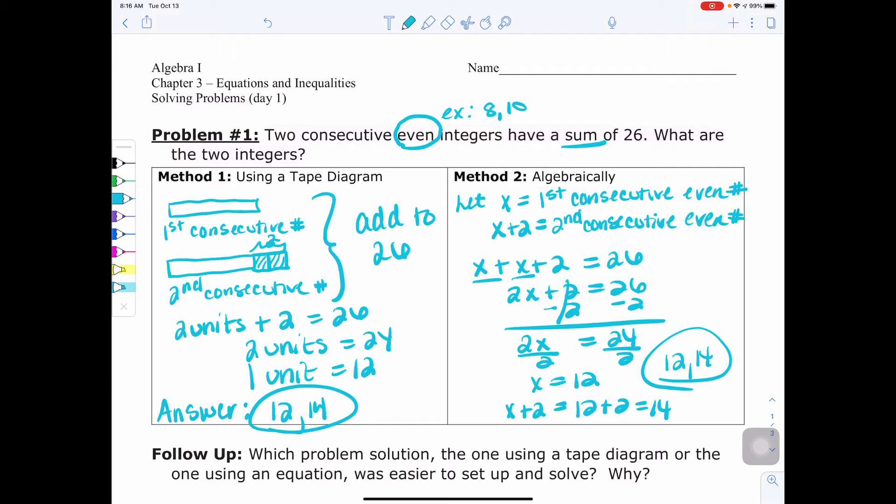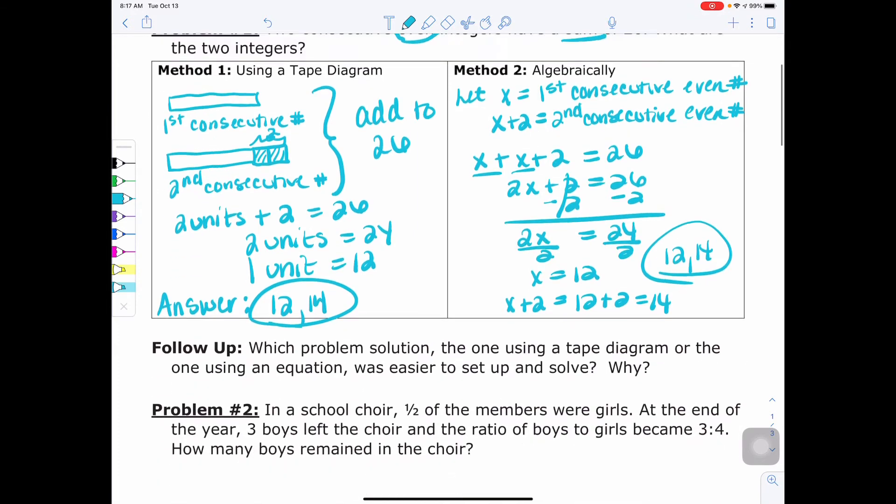So as a follow-up, which problem solution, the one with a tape diagram or the one with an equation was easier to set up and solve? Why? So I just want you to think about that for yourself. That's a question you want to ask yourself. Is using a tape diagram something that's helpful to you or not? Really, this is going to be what's going to... You want to pick whatever's going to make you successful.